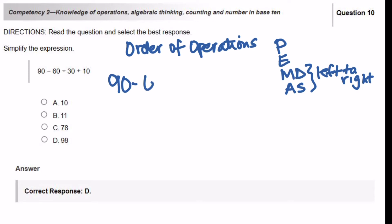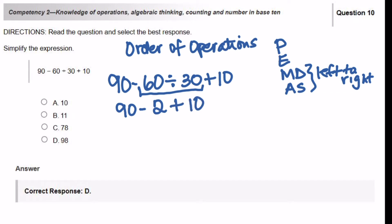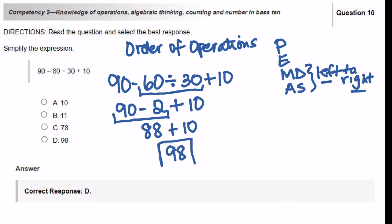We have 90 minus 60 divided by 30 plus 10. Are there any parentheses? No. Exponents? No. Multiplication? No. Division? Yes. So let's do our division first, and we have 90 minus 2, then plus 10. Now, do we have addition? Yes. Do we have subtraction? Yes. But they say read it from left to right, so the first thing that shows up is subtraction. 90 minus 2 is going to be 88, and then plus 10 is going to get me 98. So my answer is D.